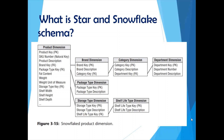A snowflake schema is a normalized version where dimension tables are not all directly linked to the fact table. A large dimension table might be split into smaller sub-tables. For example, a product dimension might be broken into package type, brand, and storage type sub-dimensions, where these sub-dimensions have their primary keys as foreign keys in the product dimension table. In a snowflake schema, dimension tables are split into sub-tables and are not all directly linked to the central fact table.